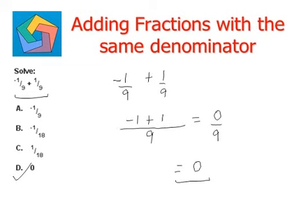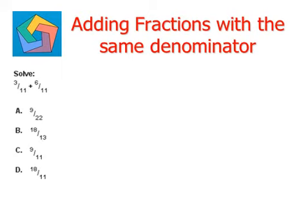Let's work out another example. Solve 3 elevenths plus 6 elevenths. Let's write down 3 elevenths plus 6 elevenths. By now I think the rule is very much clear. Put the same denominator at the bottom. The first numerator plus the second numerator.